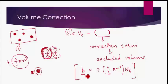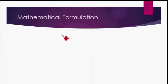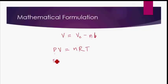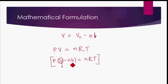If b is the excluded volume per mole, then the volume available for free movement is the volume of the container minus b. If instead of one mole we have n moles of gas, the excluded volume is n × b. This modifies the ideal gas equation: instead of pV = nRT, we now write p(V − nb) = nRT, where V is the volume of the container, n is the number of moles, and b is a constant characteristic of the gas.